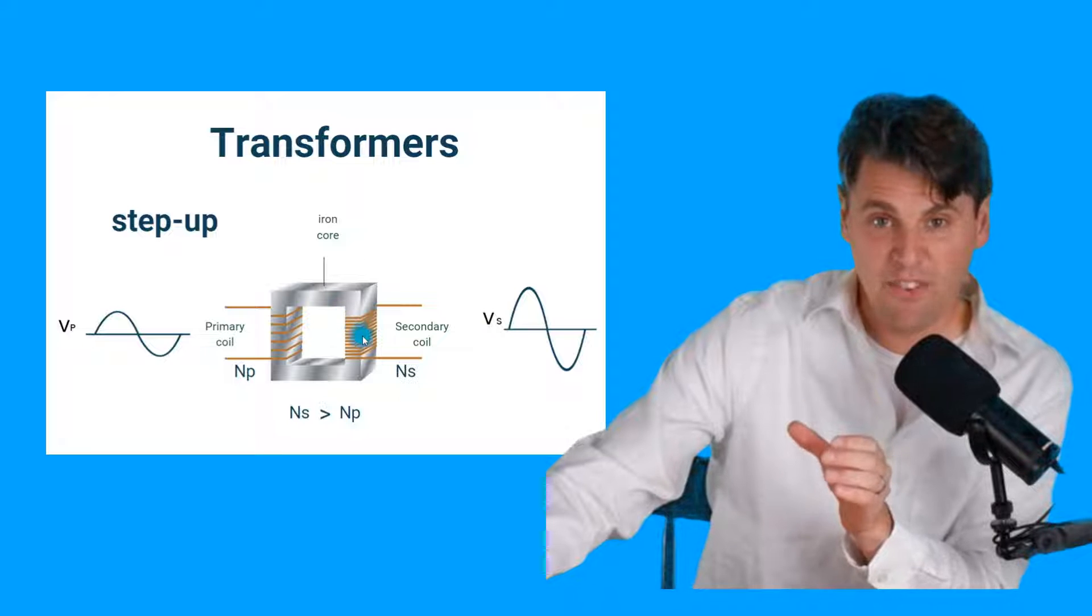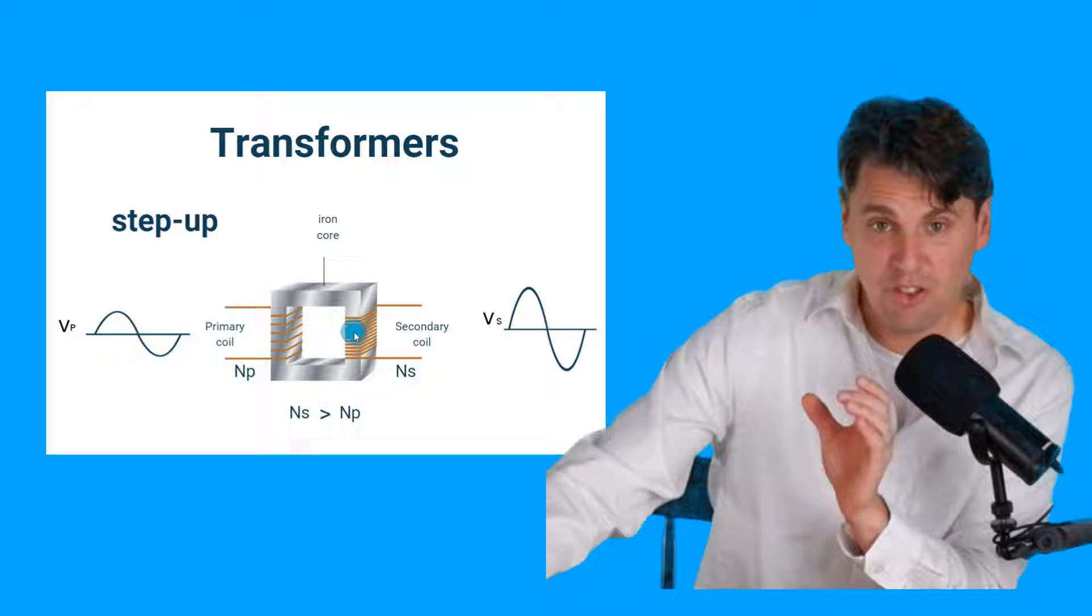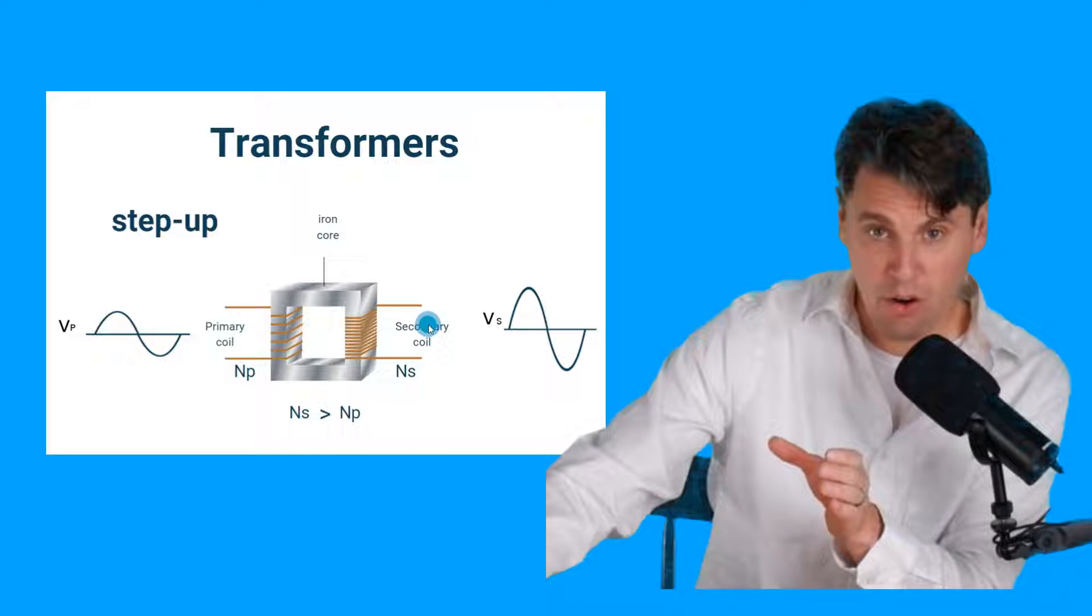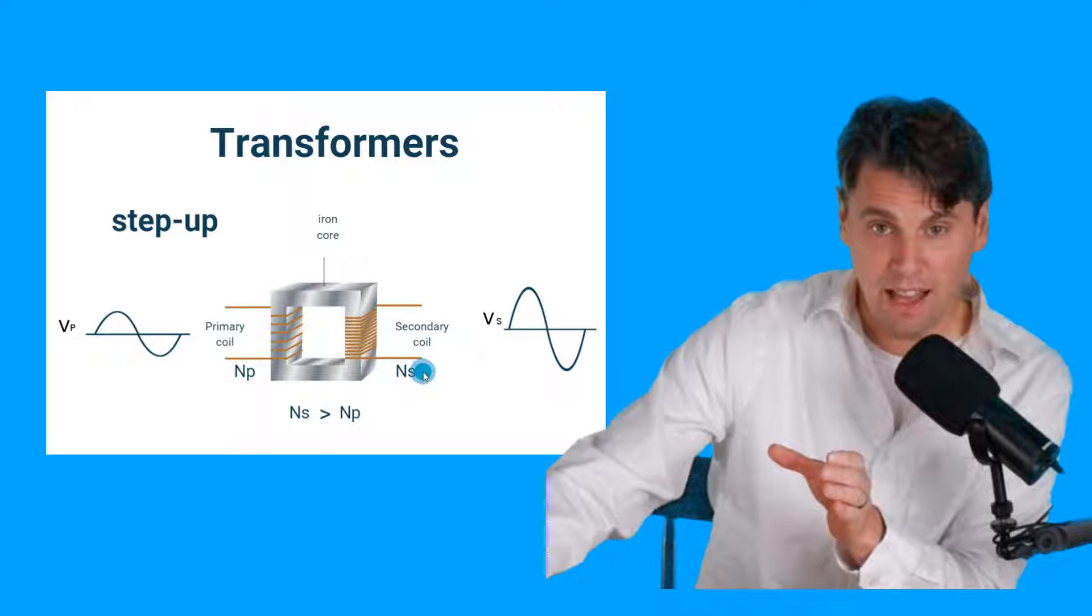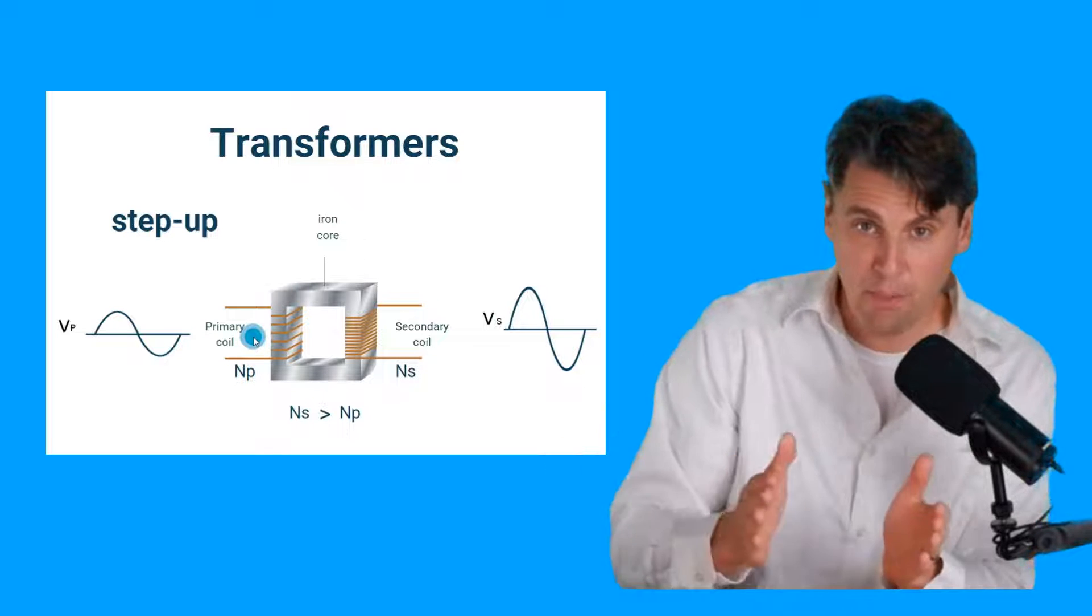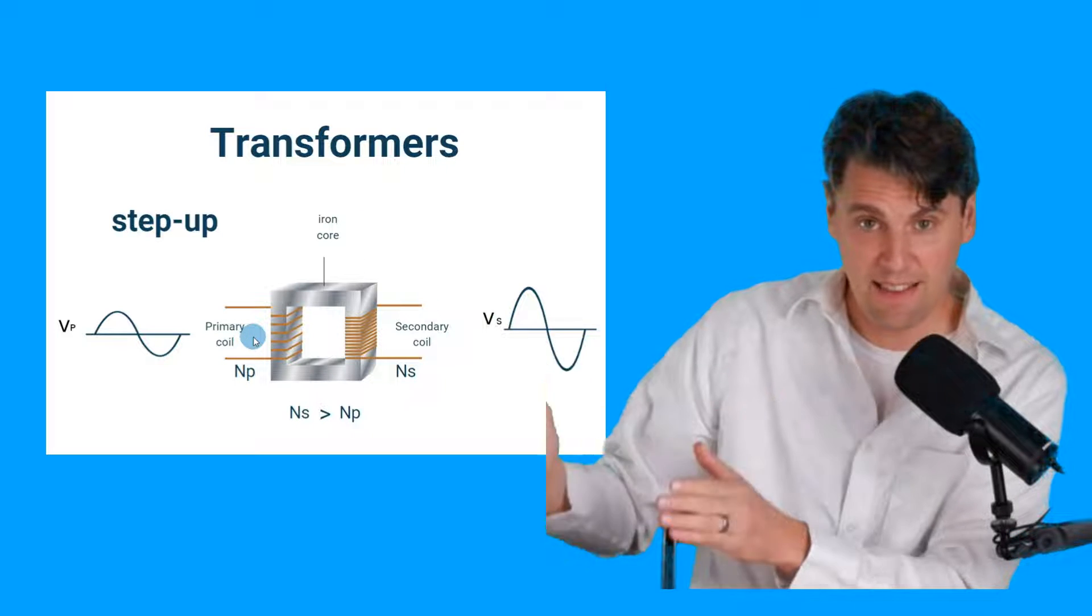Then that magnetic field, because there's a change in the magnetic field, that change in the magnetic field will actually go to a current in the loop on the other side. This is what we call the primary is the input and then the secondary is the output.